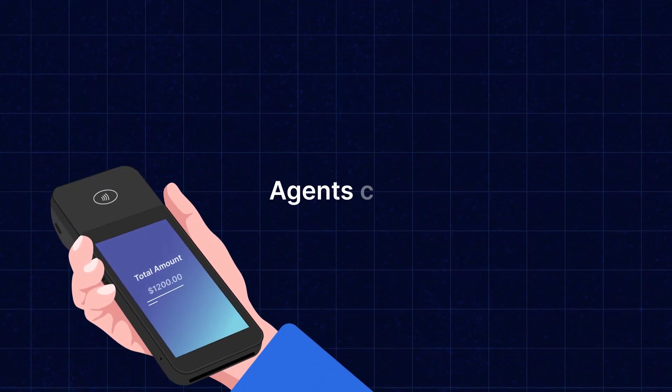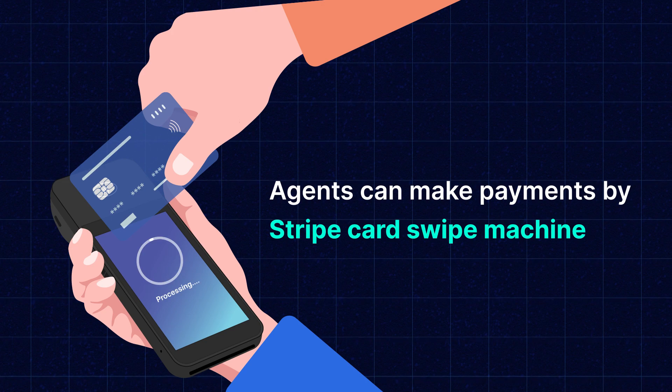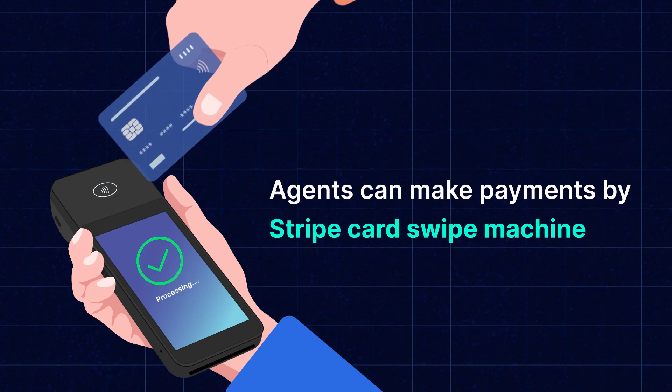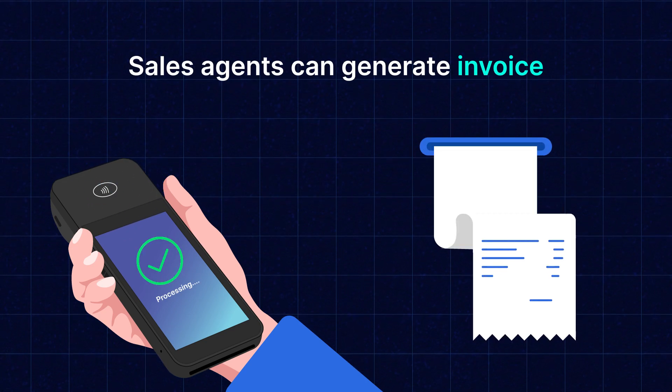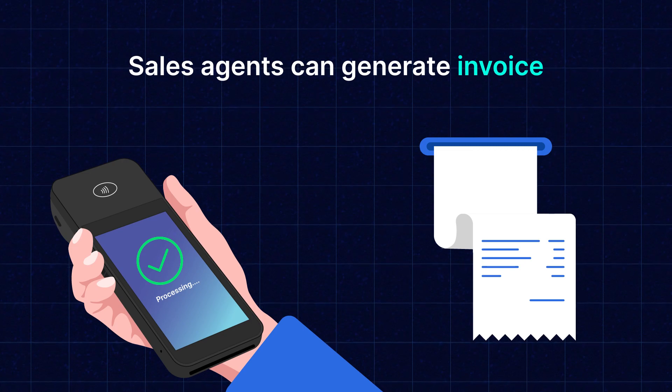I am Ashish and today I will show you how to use the Stripe Terminal Reader into your PrestaShop POS to accept card payments. You need to install the POS Stripe Terminal Reader into your PrestaShop. With this extension, sales agents can make payments by connecting the Stripe payment gateway with the card swipe machine. After processing the payment, the sales agent can generate an invoice.